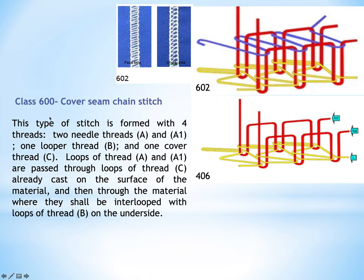Class 600, also known as cover seam chain stitch, is known for its strength and stretchability, and is generally used for knitted fabrics and garments. Sub-class 602 shows the appearance on both the face and back side of the stitch. This stitch is characterized by the use of top and bottom covering threads — the yellow portion represents the looper thread covering the needle threads on the bottom, and the purple thread is the top covering thread covering the two needle threads on the top.